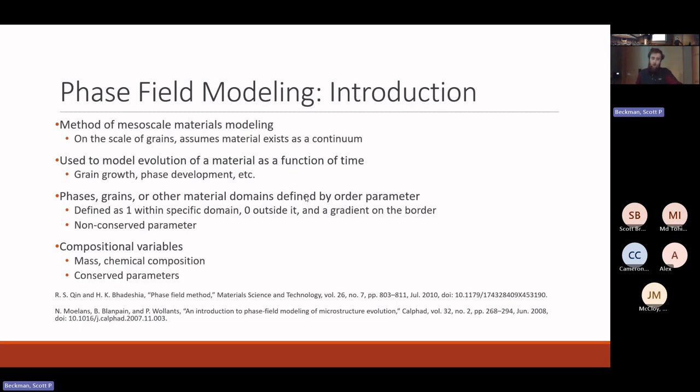In phase field modeling, each phase, grain, or other domain is modeled with an order parameter. It's going to be one if you're currently in that grain or domain and zero otherwise, and on the boundaries between these domains it's going to be a gradient somewhere between zero and one.